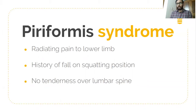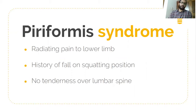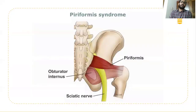Whenever occlusion of the sciatic nerve occurs at the level of the piriformis muscle — which is a horizontal muscle — inflammation of the piriformis muscle causes occlusion of the sciatic nerve passing near to it. We can diagnose this clinically very easily. The sciatic nerve passes very close to the piriformis muscle.